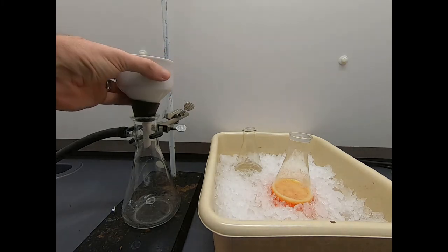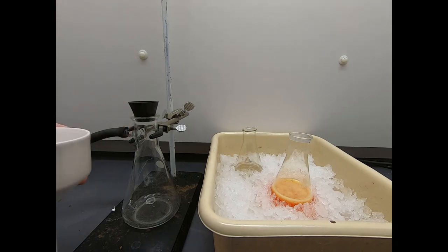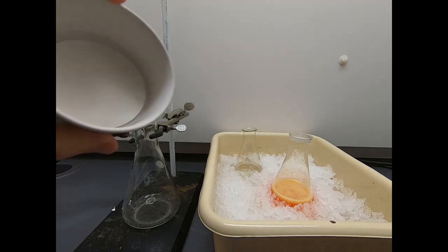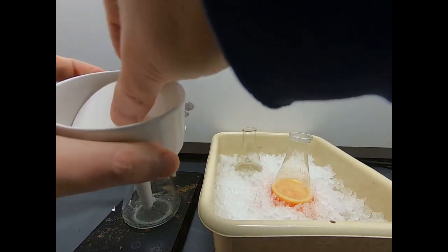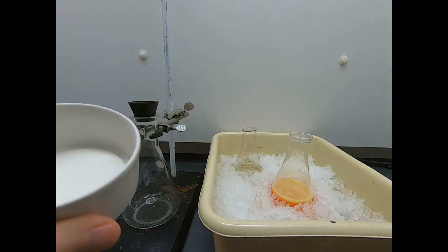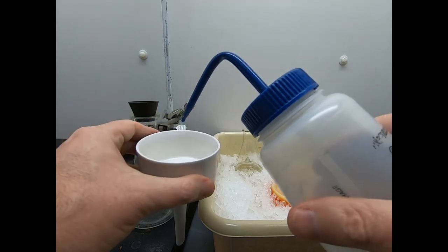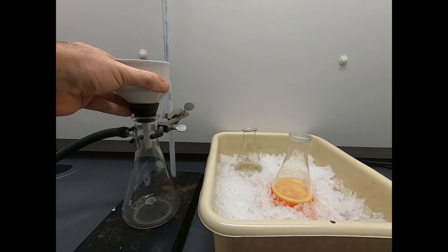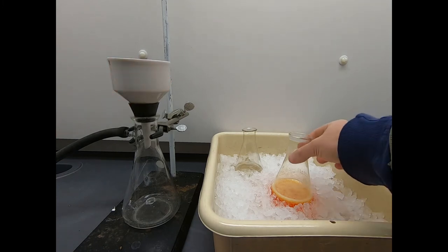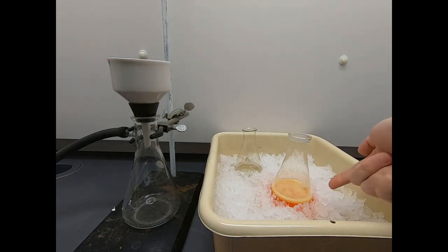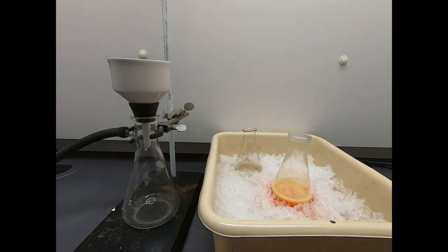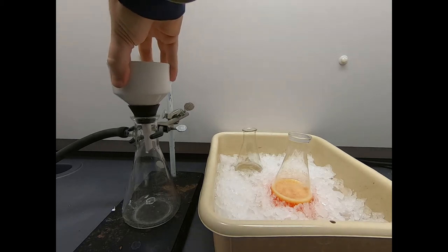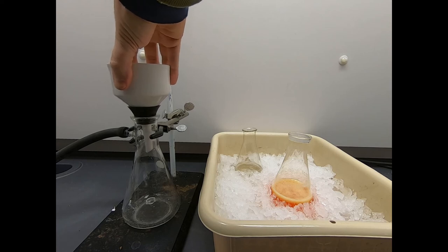Over here we have a sidearm flask. Here is a Buchner funnel with a rubber adapter. We have a hose line that goes to the house vacuum, and we have a filter paper in here. So our first order of business is to seat the filter paper, and we're going to use water for that. We use water because typically you seat your filter paper with whatever your solvent is in your recrystallization. If this were 50% ethanol, 50% water, we'd use 50% ethanol, 50% water to seat the filter paper. Now I'll turn on the vacuum and make sure everything is seated. All the holes in the funnel are covered.